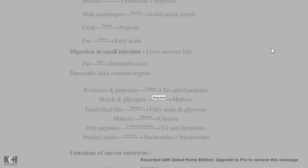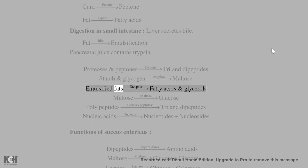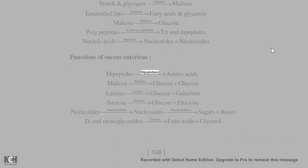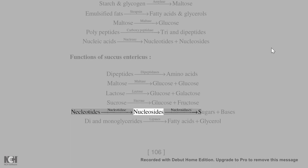Pancreatic juice contains trypsin, amylase (steapsin), maltase, and carboxypeptidase. These act on proteoses and peptones to produce tri- and dipeptides; starch and glycogen to maltose; emulsified fats to fatty acids and glycerols. Succus entericus contains dipeptidases, maltase, lactase, sucrase, nucleotidase, and nucleosidases, producing amino acids, glucose, galactose, fructose, nucleotides, nucleosides, and bases.